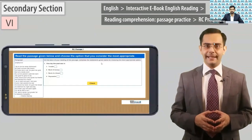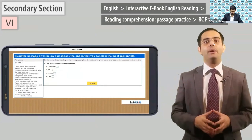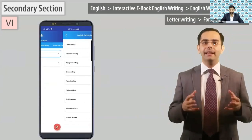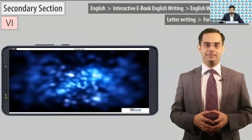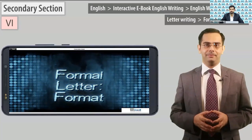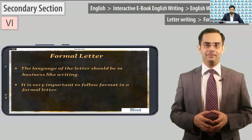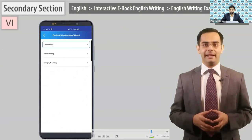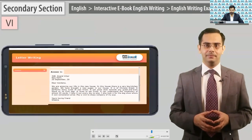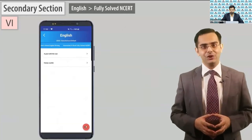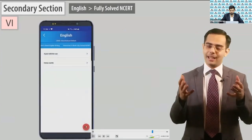This section is designed to explain different types of writing formats, like letter writing, notice writing, diary writing, etc. Go to interactive ebook English writing, click on letter writing, and play 'Formal Letter Format.' Let us understand the format of a formal letter. As already told, the language of the letter should be in business-like writing. It is very important to follow the format in a formal letter as these are generally official letters. Now go to English learning examples solved and play letter writing. Now click on fully solved NCRT and show it — explain that all NCRT book questions' solutions are present here.